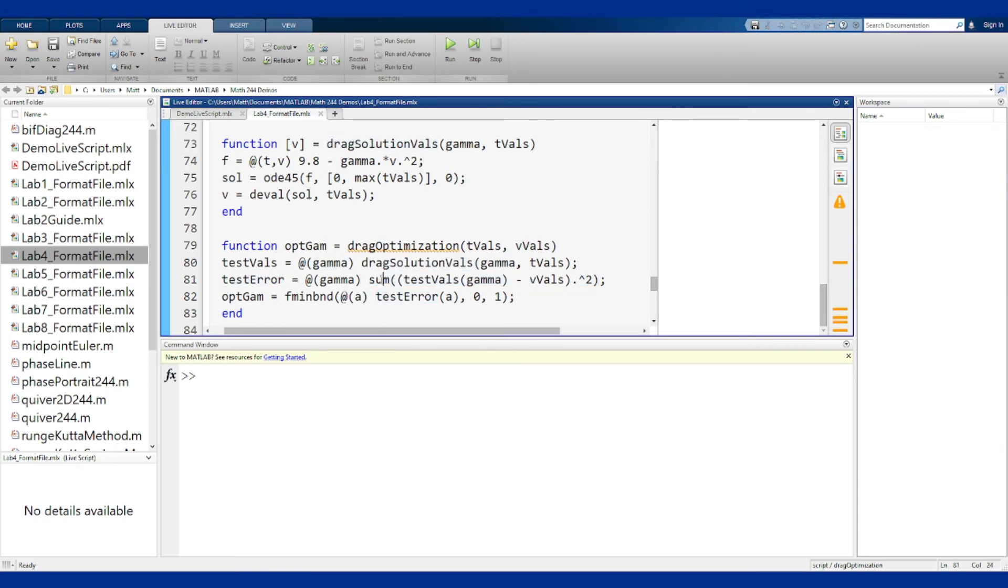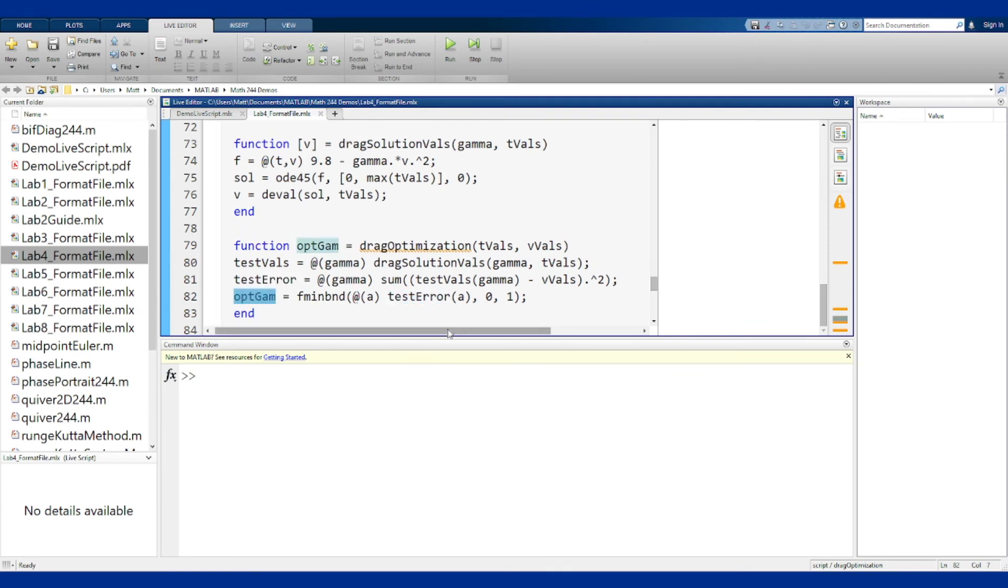So that's guessing a value for k, finding the solution, computing the error. And then fminbnd is in the optimization toolbox in MATLAB, and it's going to take this test error function—this thing right here that basically said for a value of gamma find the error between the data and the solution with that gamma—and it's going to minimize it over the range of 0 to 1. It is going to take this function of the error and find the location of the minimum value and return that in optimum gamma. It is going to do the whole process exactly we wrote out previously: find the solution for a given gamma, view the error for that gamma, and then minimize the error. And so running this set of code for a given input of t's and v's will give you a value of gamma that corresponds to the best coefficient in this case. It is the value of gamma where the solution curve is closest to the actual data given in the problem statement.